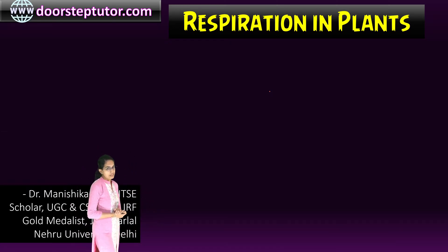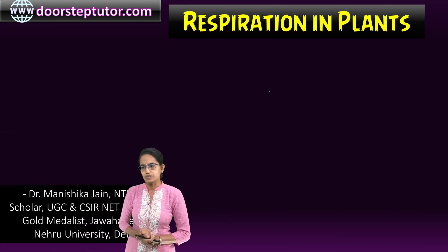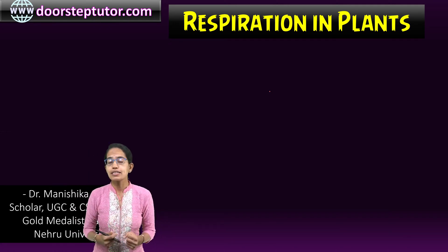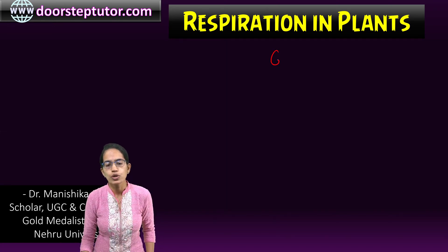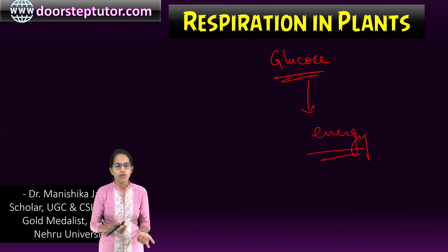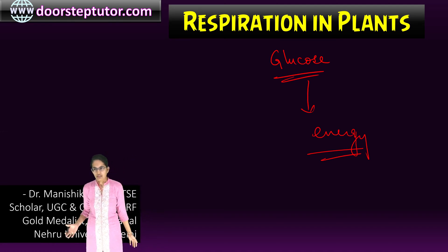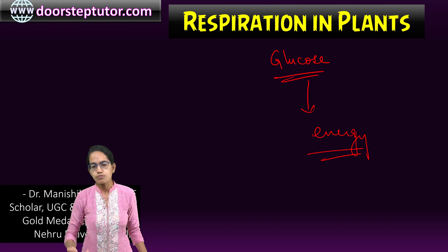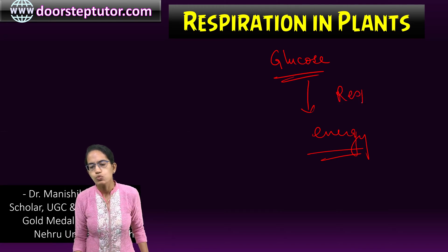In this lecture we will talk about respiration in plants. Now what is respiration? Energy is needed for various activities and this energy comes from breakdown of glucose. The glucose breaks down to provide energy and this energy is utilized by various organs of the body for various different functions. This energy which is obtained from glucose by the process of breakdown is what is called as the process of respiration.